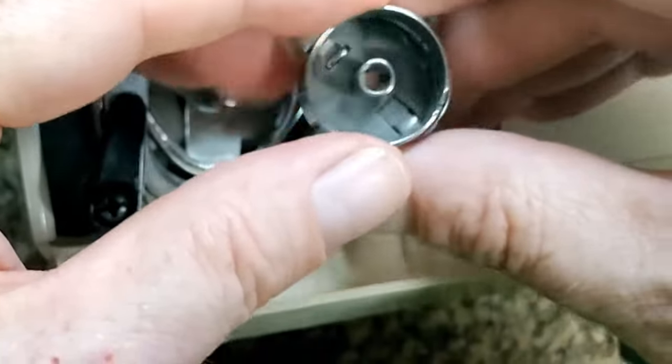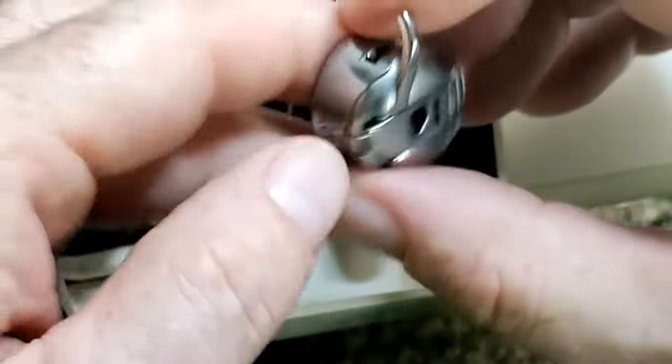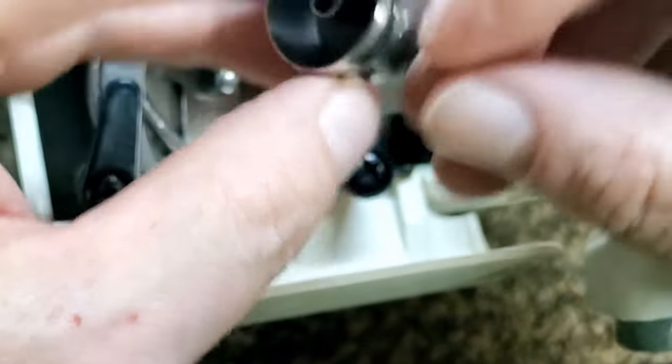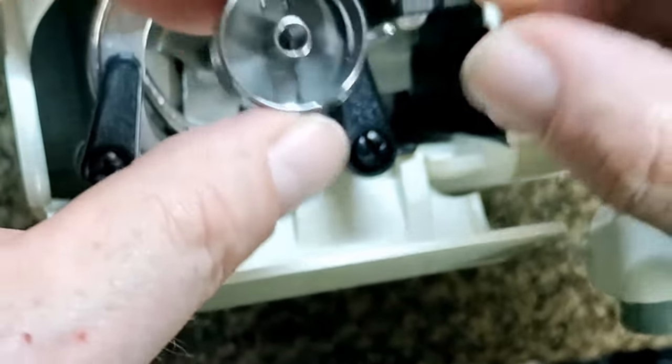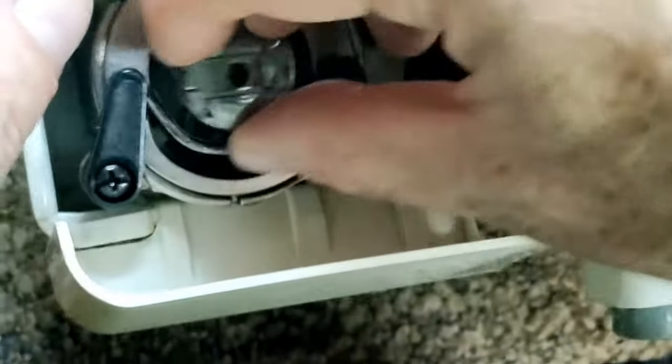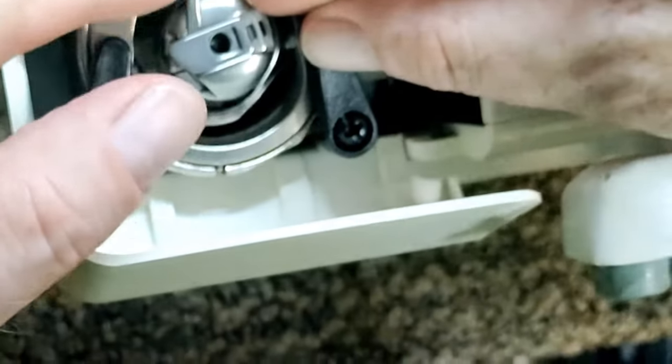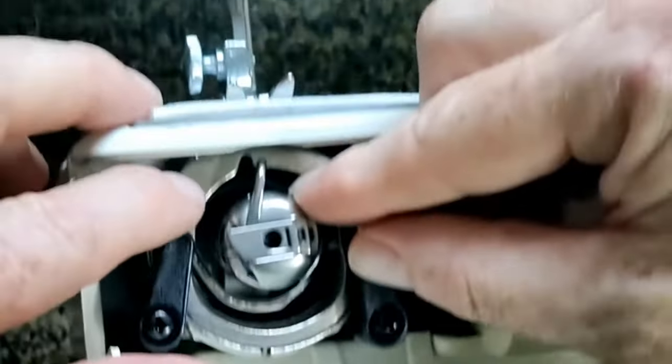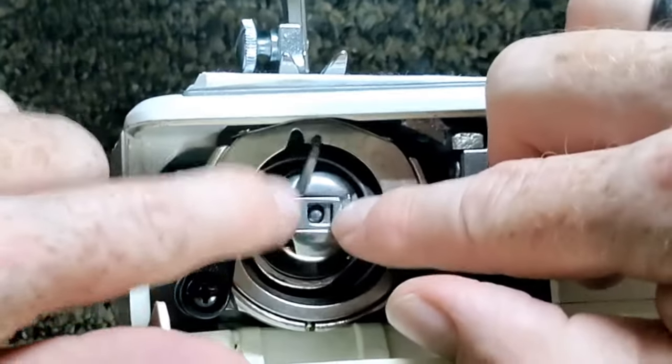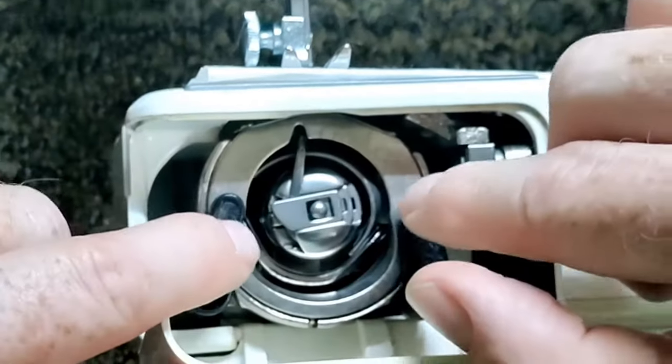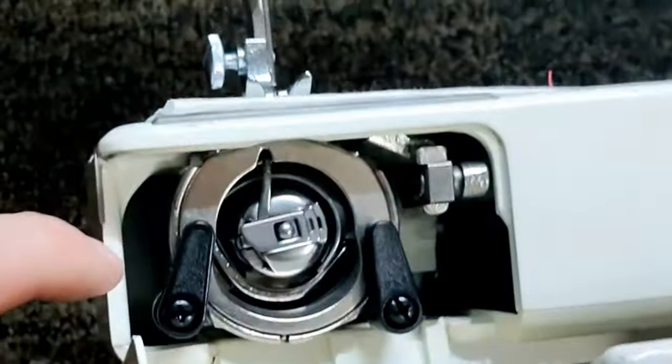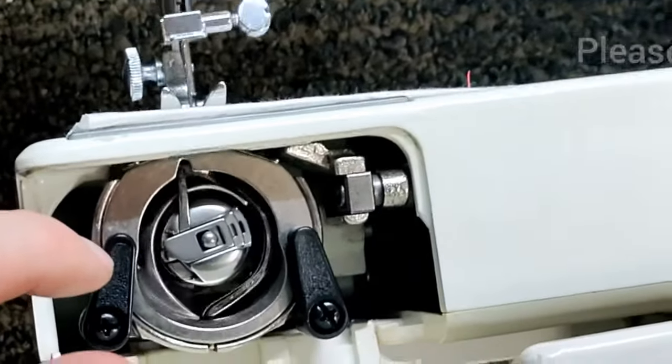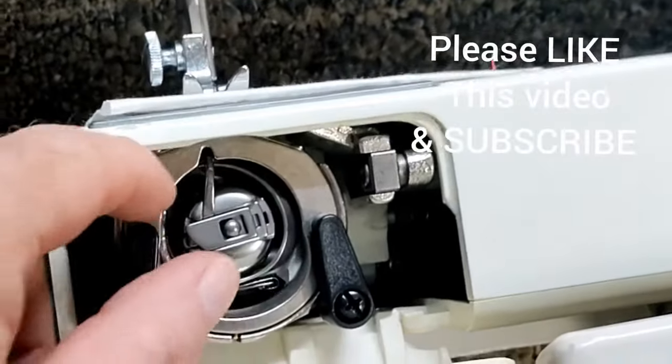Next you have your bobbin case and once your thread is in there properly, you just take it and this arm that's here goes into the groove up top, you just line it up and snap it into place. You move your hand wheel back and forth, you'll see everything's moving nice and smoothly.